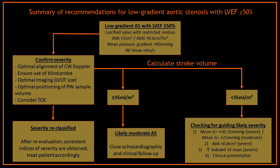Here we have a summary of recommendations for low gradient aortic stenosis with a left ventricular ejection fraction equal to or more than 50%. If for example you found a calcified aortic valve with restricted motion and you are getting an aortic valve area less than 1 cm², an aortic valve area index less than 0.6, a mean pressure gradient less than 40 mmHg, and an aortic valve V-max less than 4 m/s, the first thing you have to do is confirm the severity.